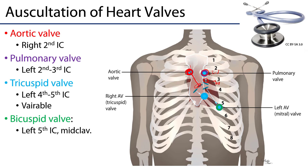For the atrioventricular valves, blood is moving inferiorly and laterally to the left. For the tricuspid valve, one would first attempt auscultation at the left fifth intercostal space just off the sternal border; if unsuccessful, you could also try the fourth intercostal space or at the sternal angle. For the bicuspid valve, take the midclavicular line and go to the fifth intercostal space along that midclavicular line for the bicuspid or mitral valve on the left side.